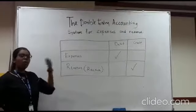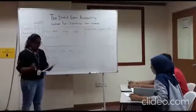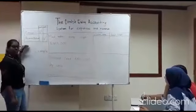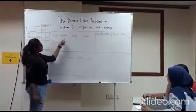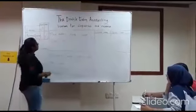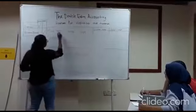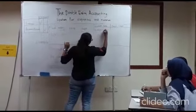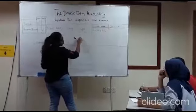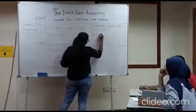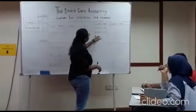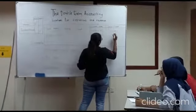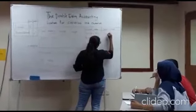I'm going to give an example question for your understanding. These are the example questions for expenses and revenue, and these are the formula. The first question: pay salary using check for RM 3000. I'm going to identify two accounts, which is salary and check. For salary, I'm going to write down the salary account. For the check, I'm going to convert it to bank account. For the salary, it's going to be on the debit side. For the bank, it's going to be on the credit side.